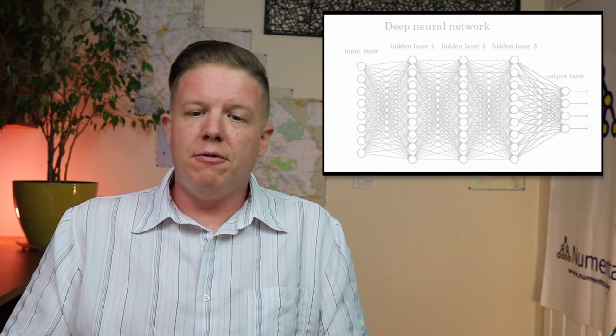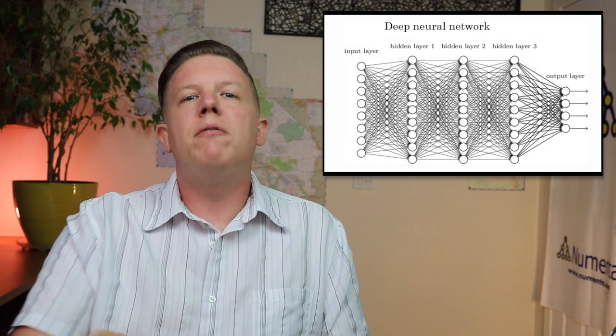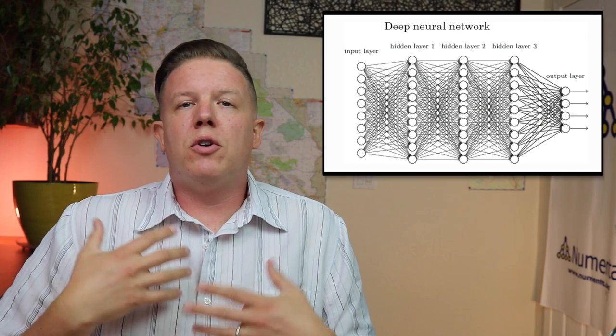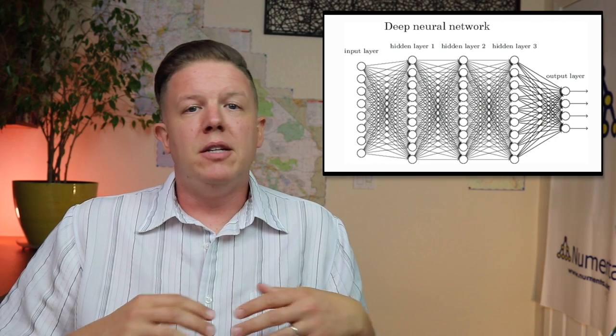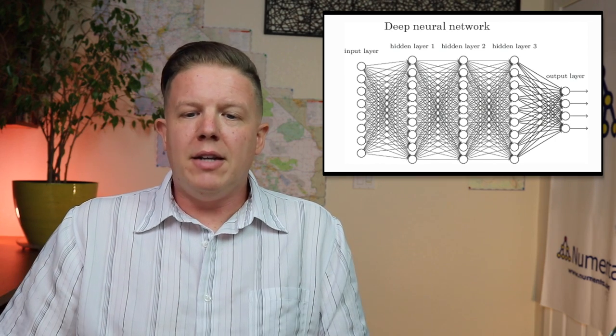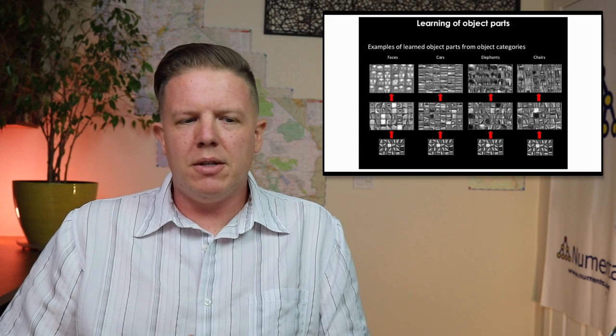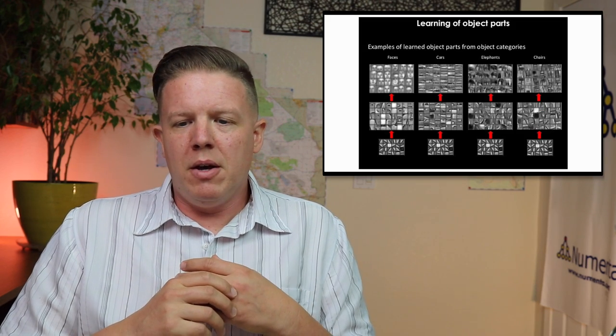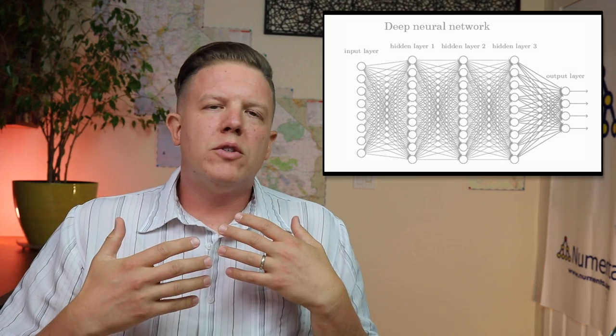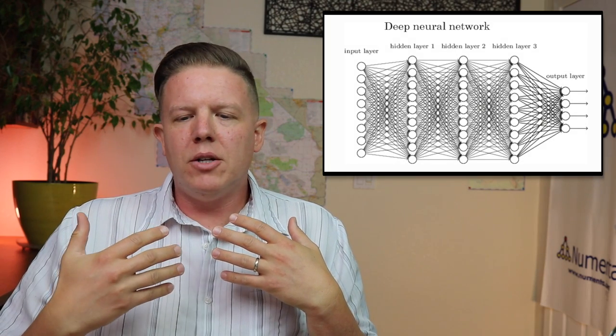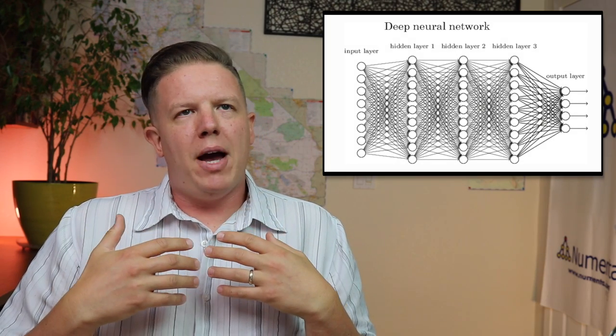And deep learning can do some amazing things: image categorization, speech recognition. But because at its core it's so loosely based on biology, I don't see this path moving towards the machine intelligence that I defined earlier.